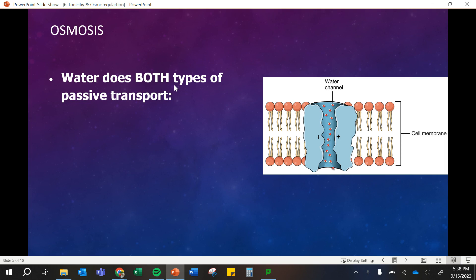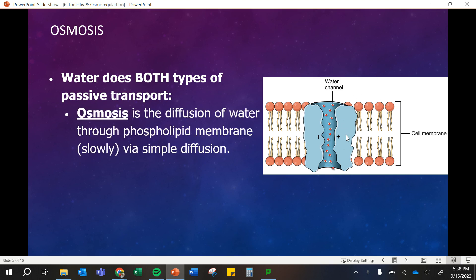Osmosis and water does both types of passive transport. It can pass directly through the membrane, or it can do facilitated transport where it goes through channels. So osmosis is that diffusion of water, and this happens slowly when it goes through. You can think about why that is, and that's because our water is polar and it doesn't want to easily go through that membrane with that non-polar region in the middle.